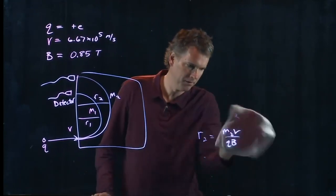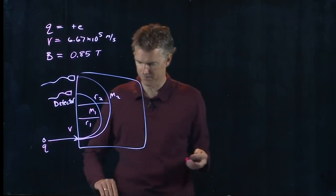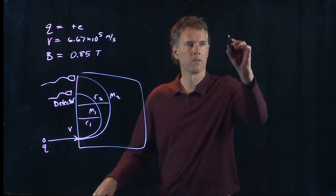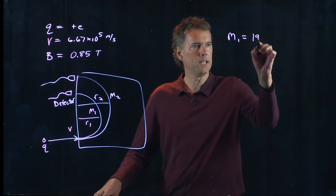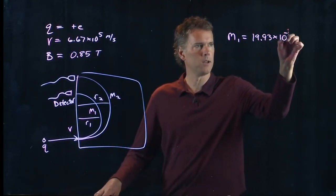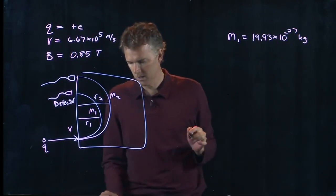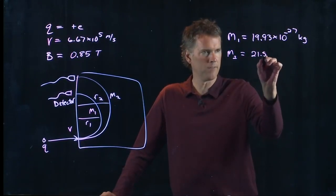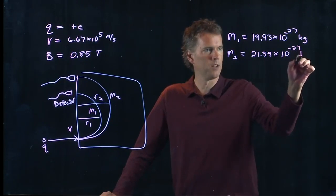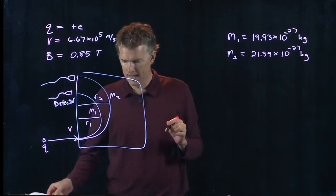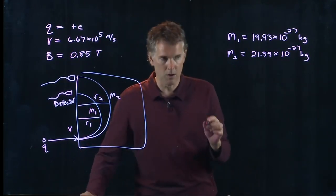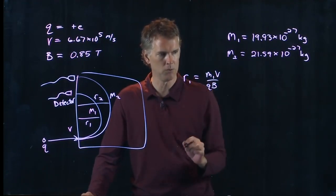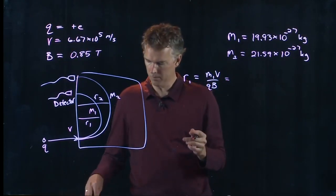Let's tell you the two different masses and let's see if we can calculate the radius of curvature. Mass number one is 19.93 times 10 to the minus 27 kilograms. Mass number two is 21.59 times 10 to the minus 27 kilograms. Now let's calculate r1 and r2.